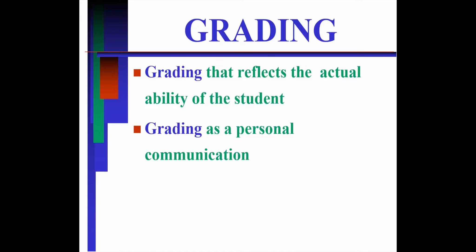I want to say something about documentation. There is documentation on the Carleton website. If you go to the Carleton homepage and search 'grading,' you'll get documents about what the university thinks grading is all about. You need to start there — you need to understand what the university's expectations are. For example, what constitutes an A? The university has a statement: anything between 90 and 100 is an A, which is also the grading system at the University of Toronto.